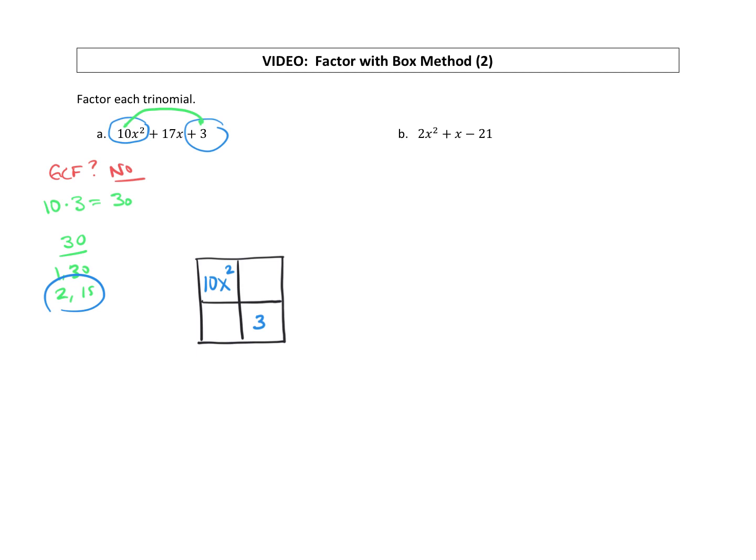So we want the factor pair 2 and 15. So we're going to fill in the rest of our box. One box gets a 2x, the other box gets a 15x.